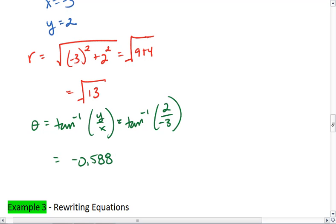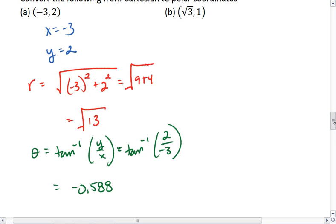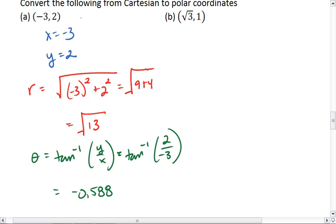If these numbers look familiar, it's because we actually did one very similar to this above. And this tells me that polar coordinates-wise, I have root 13, comma, negative 0.588.